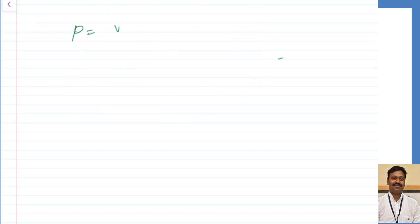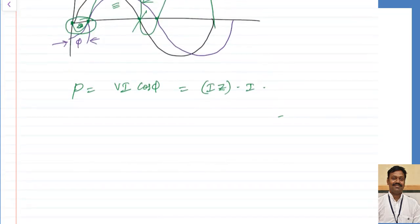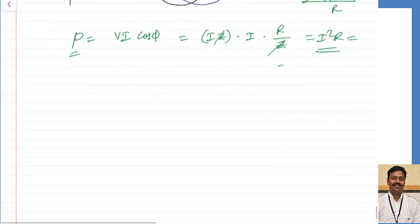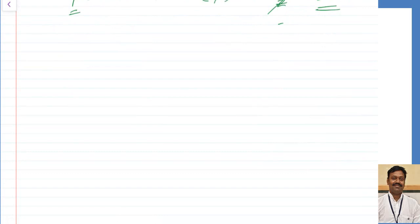Power P = V·I·cos(φ). Since V = I·Z and cos(φ) = R/Z from the impedance triangle, substituting gives P = I²·Z·(R/Z) = I²·R. So the actual power consumed is only due to resistance. The inductor never consumes power — it takes power for one quarter cycle and returns it back to the supply for another quarter cycle, so average power for a pure inductor is always zero.